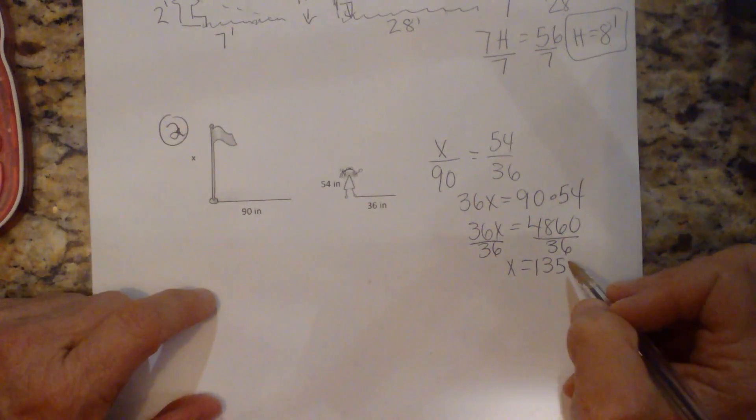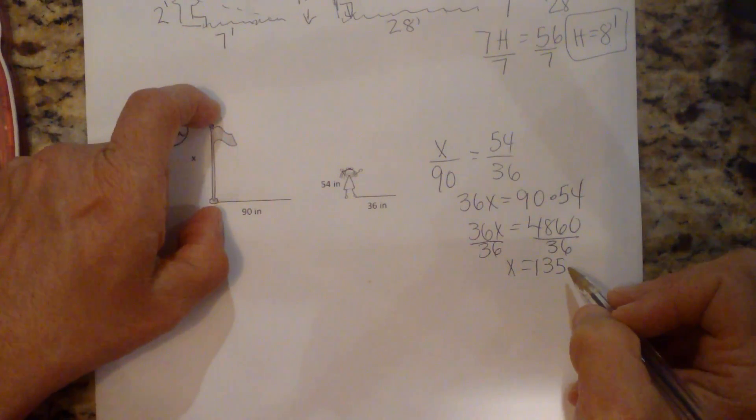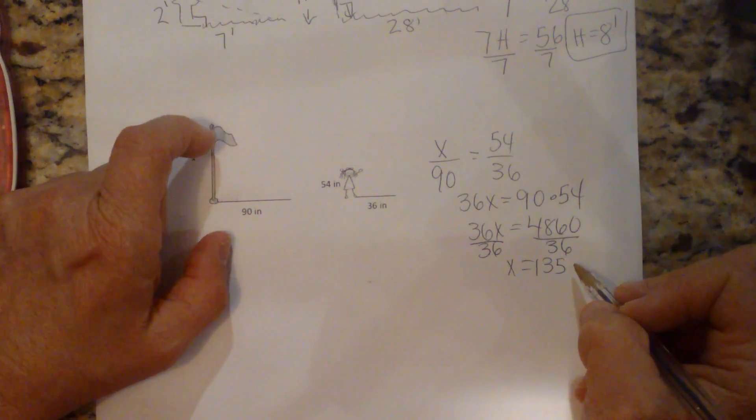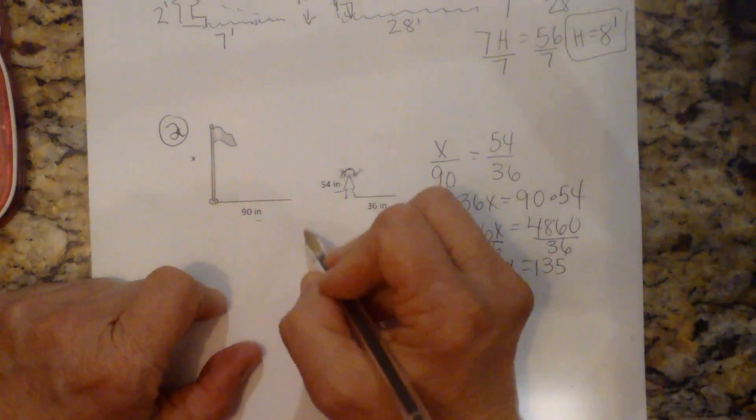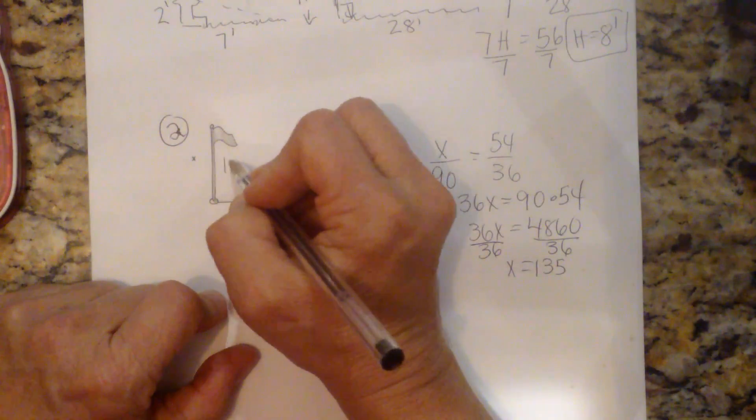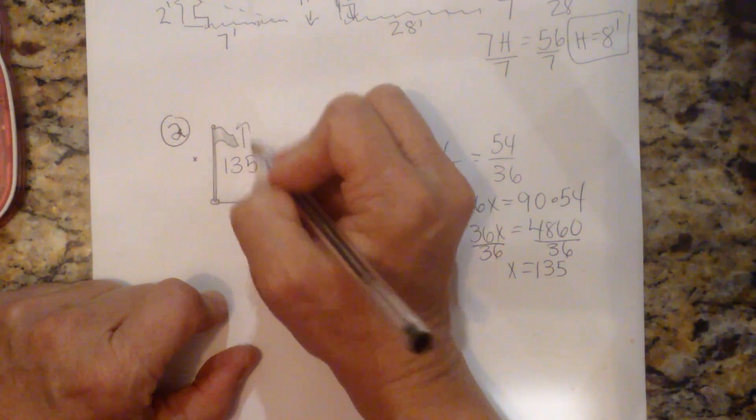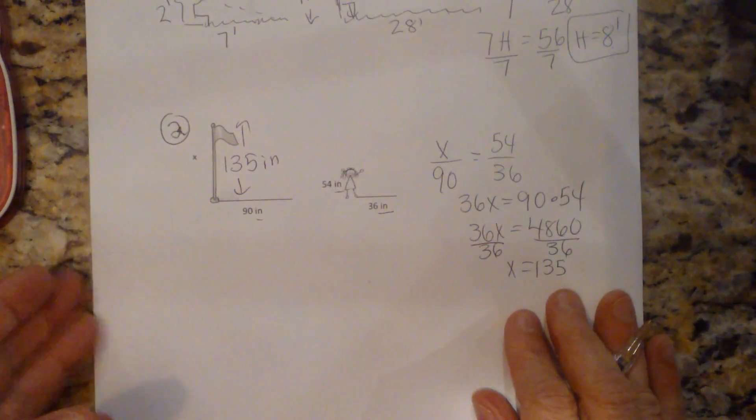And we get x is equal to 135. So what does that represent? That represents the height of the flagpole. What unit measure are we in? We're in inches. So this is going to be 135 inches tall. So that's how we do that one.